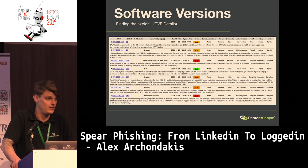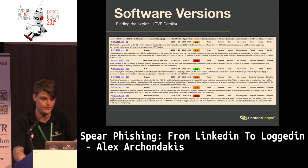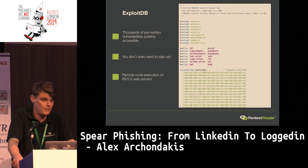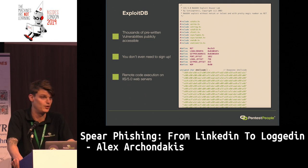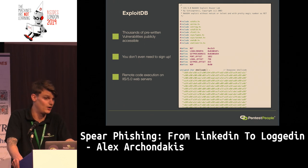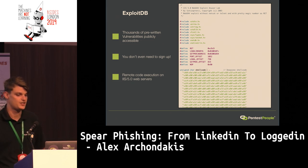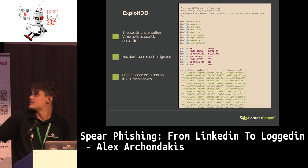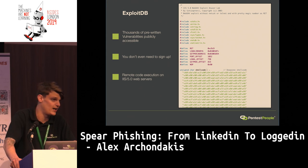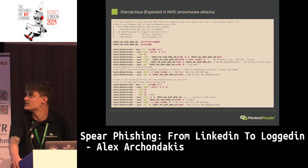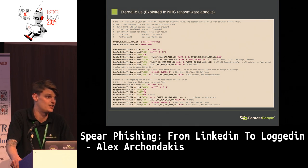Once we've found exploits on CVE Details, we need the code to compile and run against the target. ExploitDB is a publicly available website — no sign-up required — very easy to use, and it hosts exploit code. It also hosts the vulnerable software alongside the exploits. So if you want to try hacking, go on ExploitDB, download the vulnerable software and the exploit, fire them off yourself and see how easy it actually is. Here's a snippet from the Microsoft IIS exploit and the EternalBlue code used in the NHS ransomware attacks.